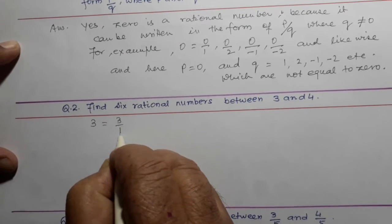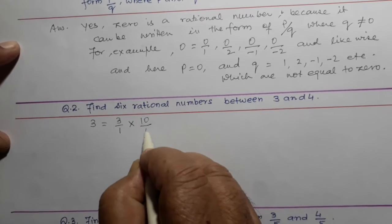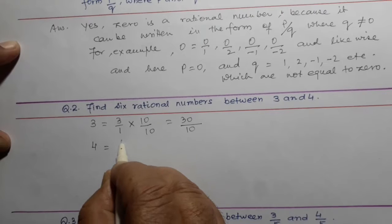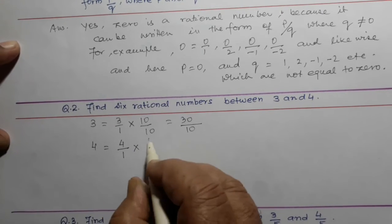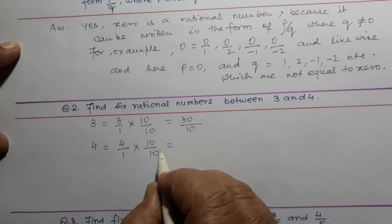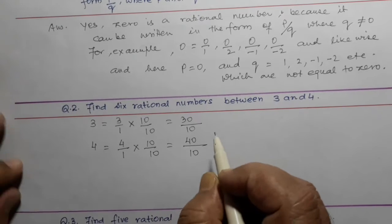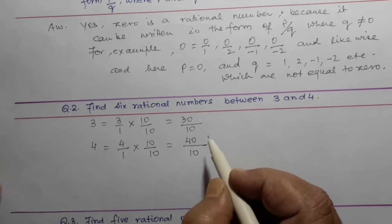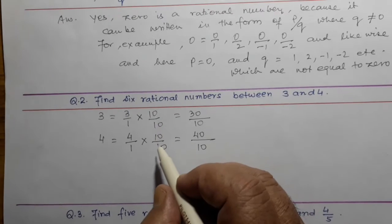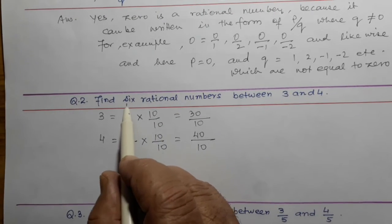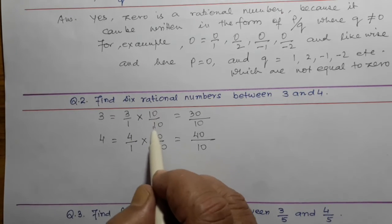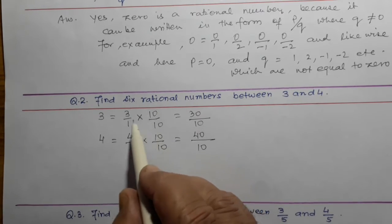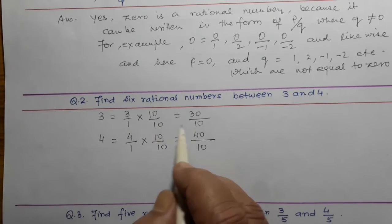3 can be written as 3 by 1. If we multiply it by 10 by 10, it will be 30 by 10. And 4 can be written as 4 by 1 into 10 by 10, which will be 40 by 10. We can multiply by any number greater than 6 — for example 7 by 7, 9 by 9, 10 by 10, or 100 by 100 — for both numerator and denominator. Then there will be no change in the value.